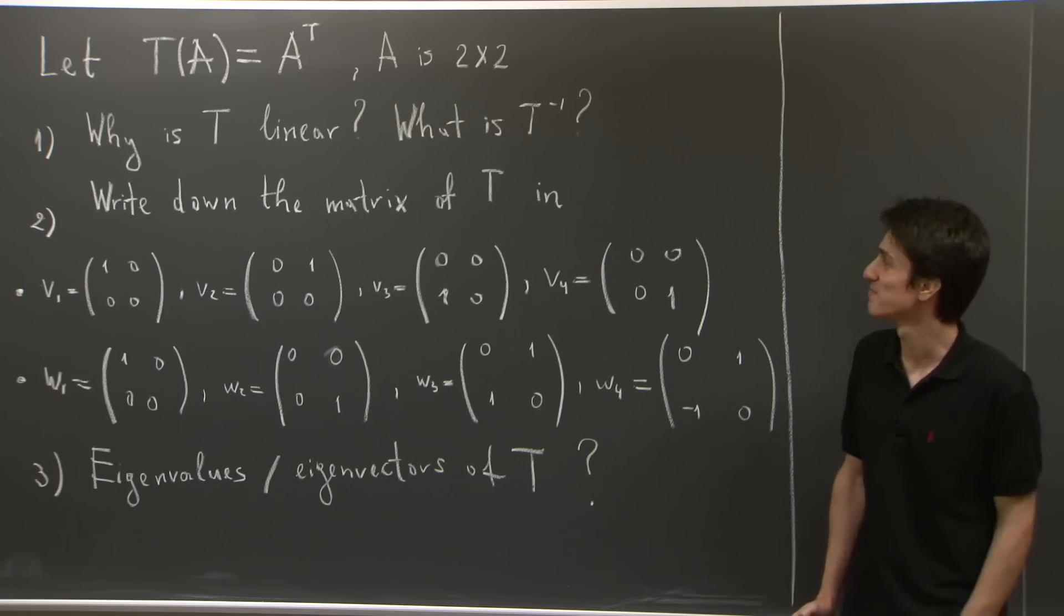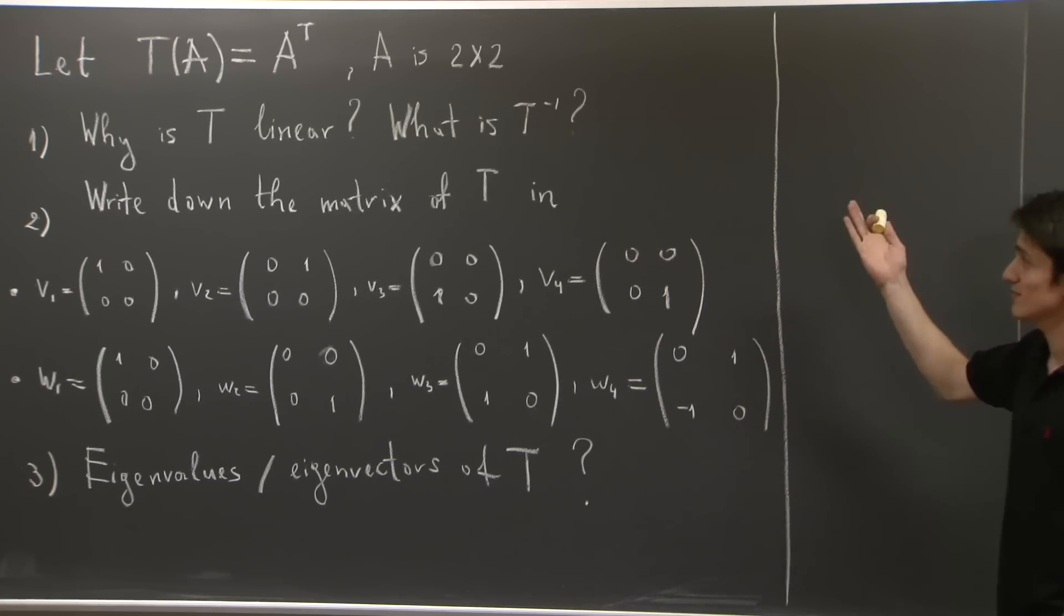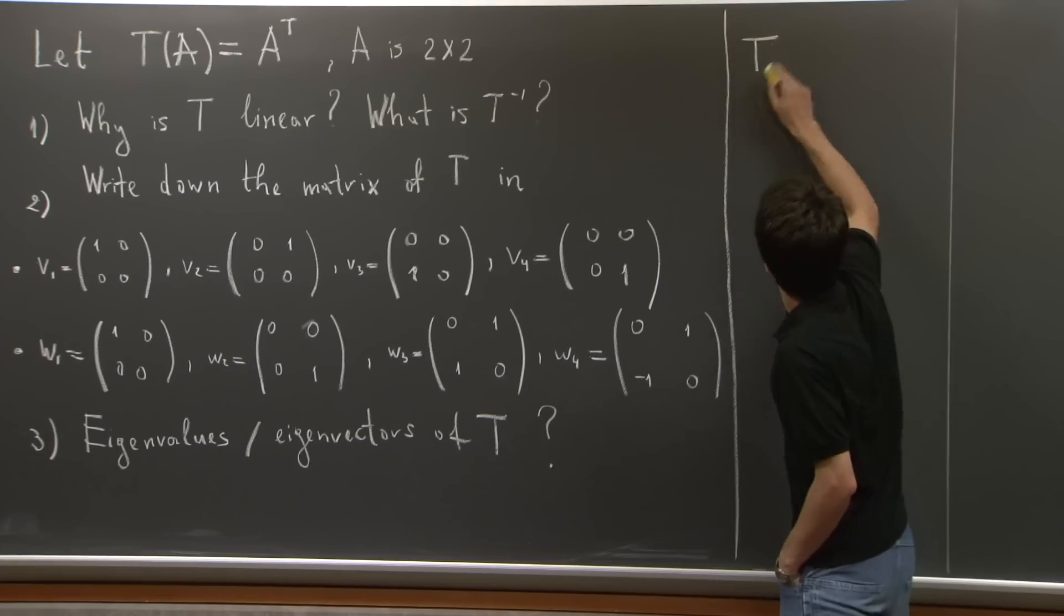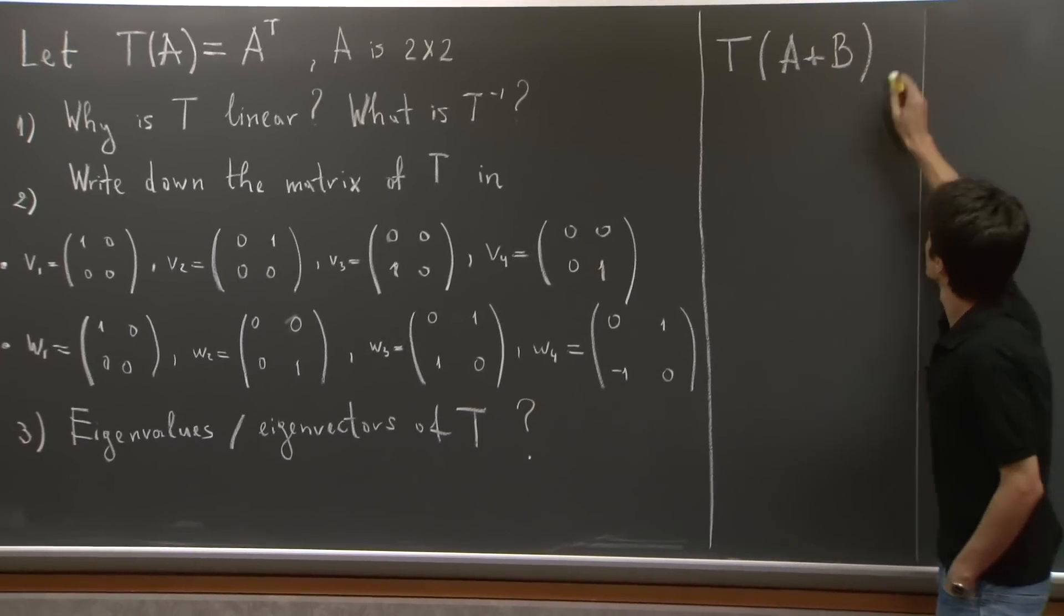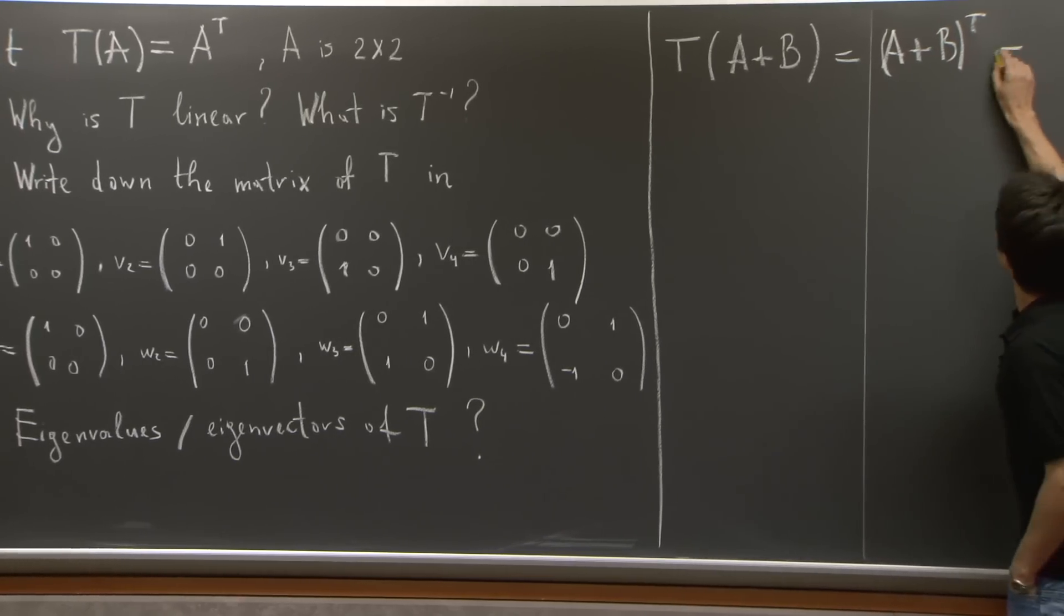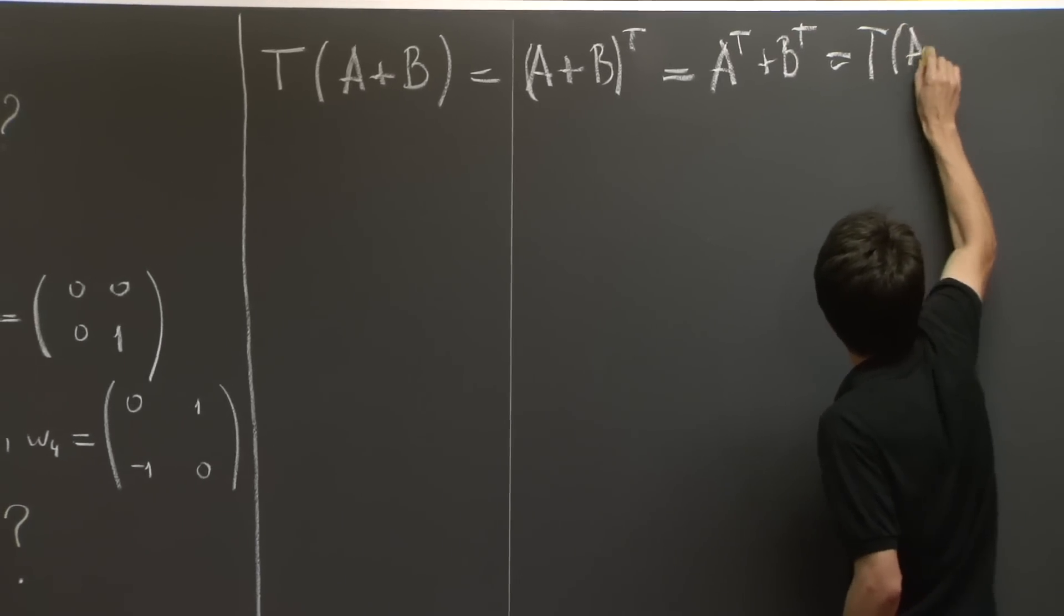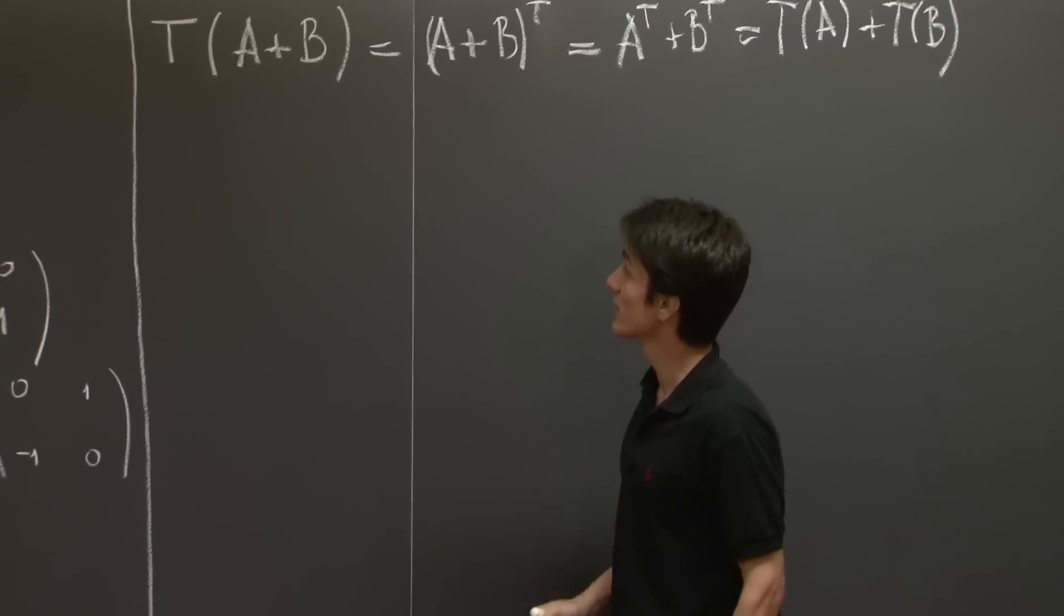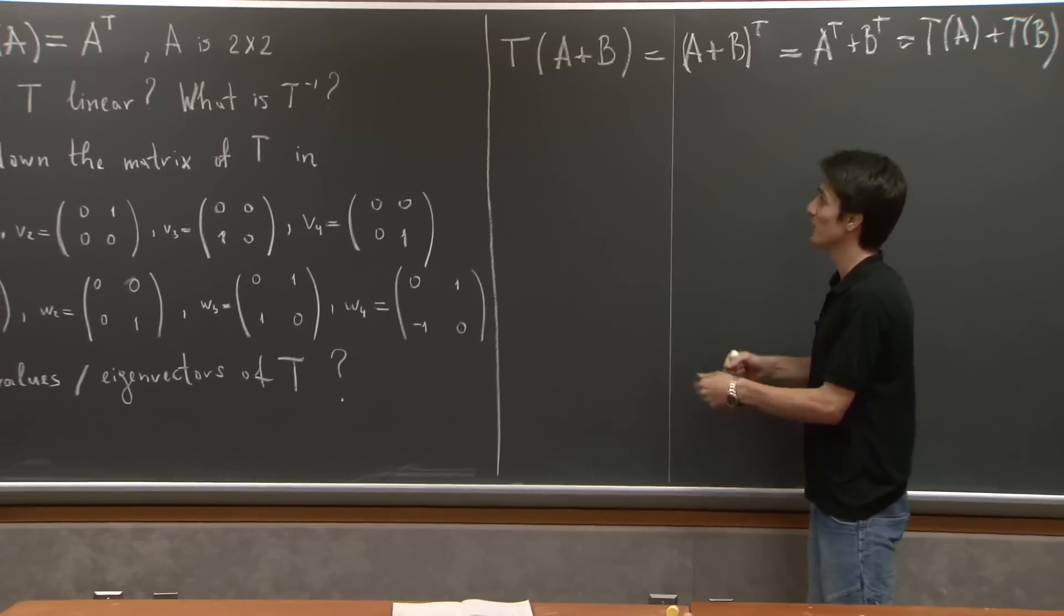Hi again. So the first question we need to ask ourselves is, why is T a linear operator? What are the abstract properties that a linear operator satisfies? What happens when T acts on the sum of two matrices, A and B? It produces the transpose of A plus B. But we know that this is A transpose plus B transpose. And so this is exactly T(A) plus T(B). So the transformation takes the sum of two matrices into the sum of their transformations.